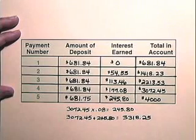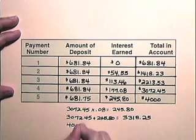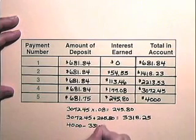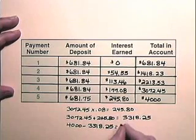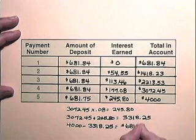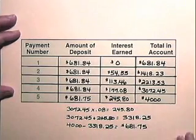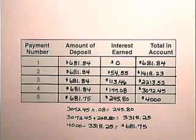So we see that the last payment is only the amount needed to take us up to a total of $4,000 which is $681.75 such that at the end of the fifth year we have a total of $4,000 in the account.